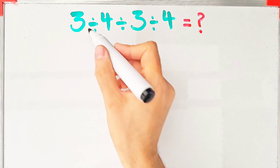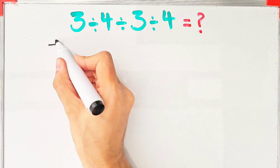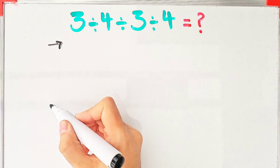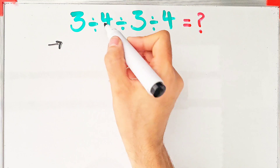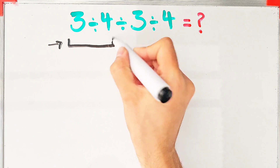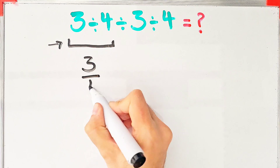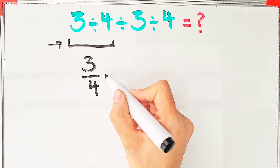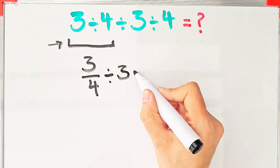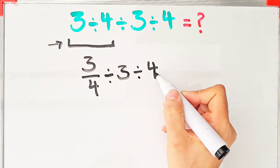Let's solve this question step by step together. Because we have 3 divisions, we start from the left and simplify: 3 divided by 4 equals 3 over 4. Now we have 3 over 4 divided by 3, then divided by 4.